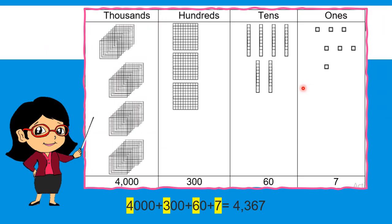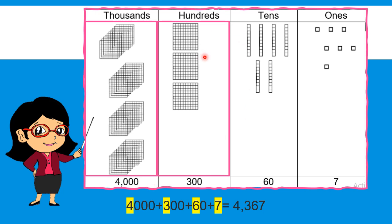Let us try this example on the table. How many blocks do we have? 1, 2, 3, 4 — 4 blocks is equal to 4,000. How many flats do we have? 1, 2, 3, 4, 5, 6 — wait, 3 flats is equal to 300. How many longs do we have? 1, 2, 3, 4, 5, 6 — 6 longs is equal to 60. And how many squares do we have? 1, 2, 3, 4, 5, 6, 7 — we have 7 squares which is equal to 7. If we put together all these values, we can have 4,367.